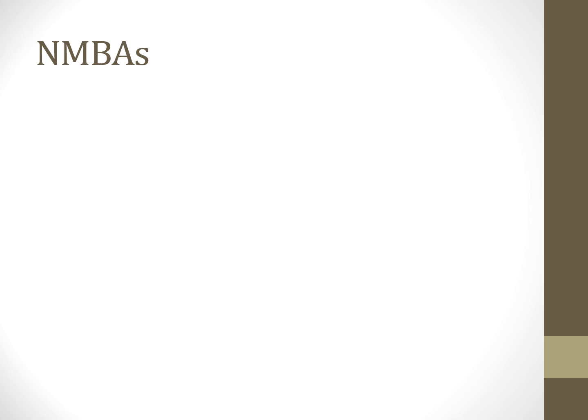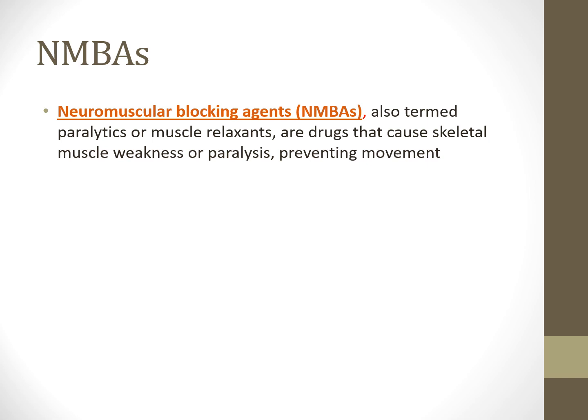Neuromuscular blockade agents are also termed paralytics or muscle relaxants. They cause skeletal muscle weakness and paralysis to prevent patient movement. Primarily seen in general anesthesia — if someone has their rib cage open for heart surgery, you don't want them moving. This also decreases oxygen consumption: when we paralyze someone, they're not moving their muscles, using far less energy. Therefore more oxygen is available for vital organs like the brain, heart, and kidneys.